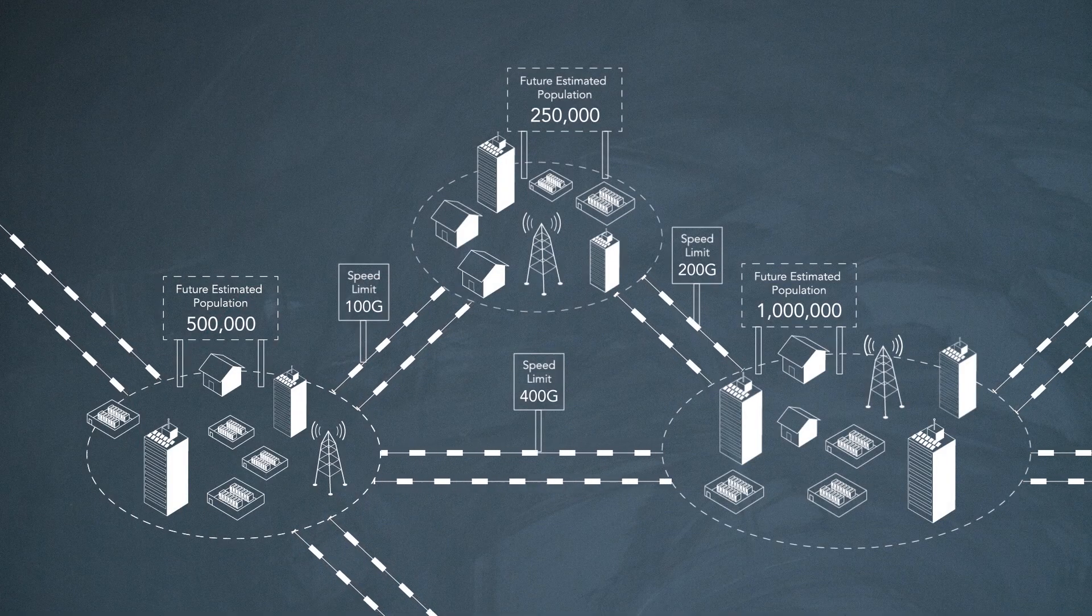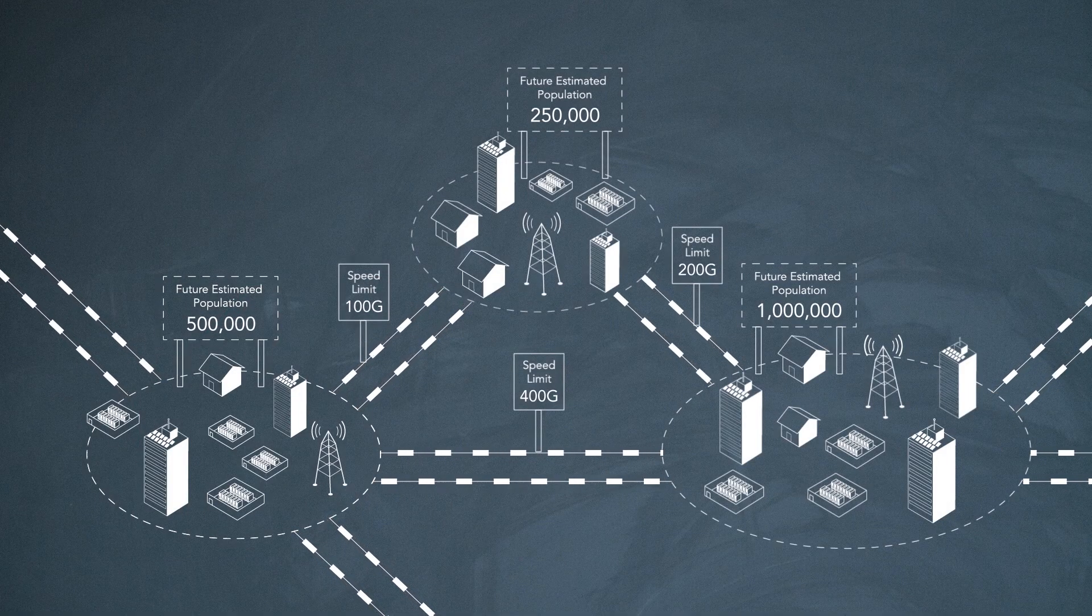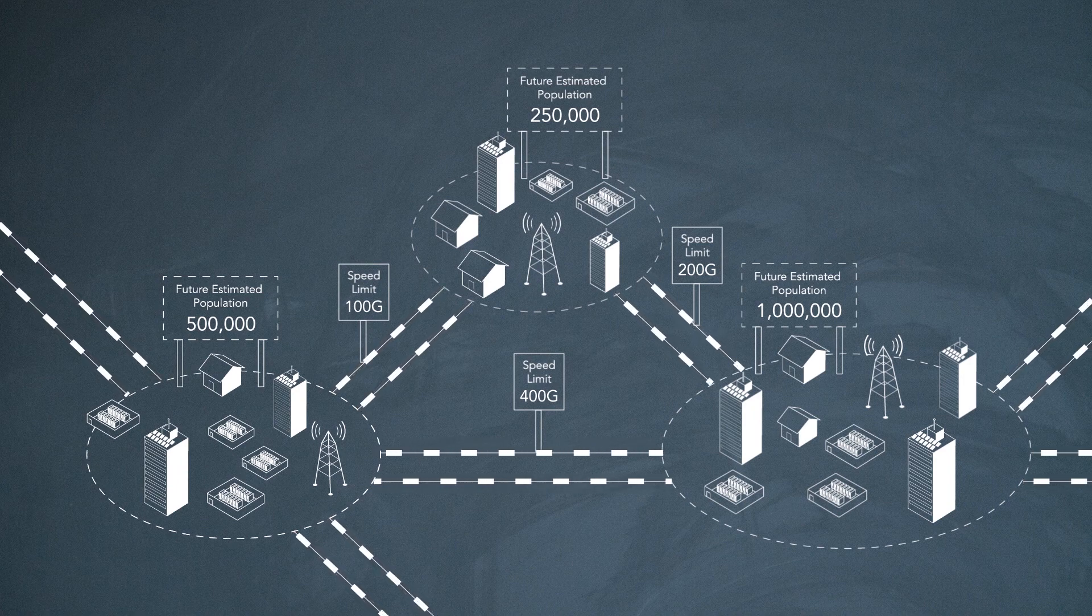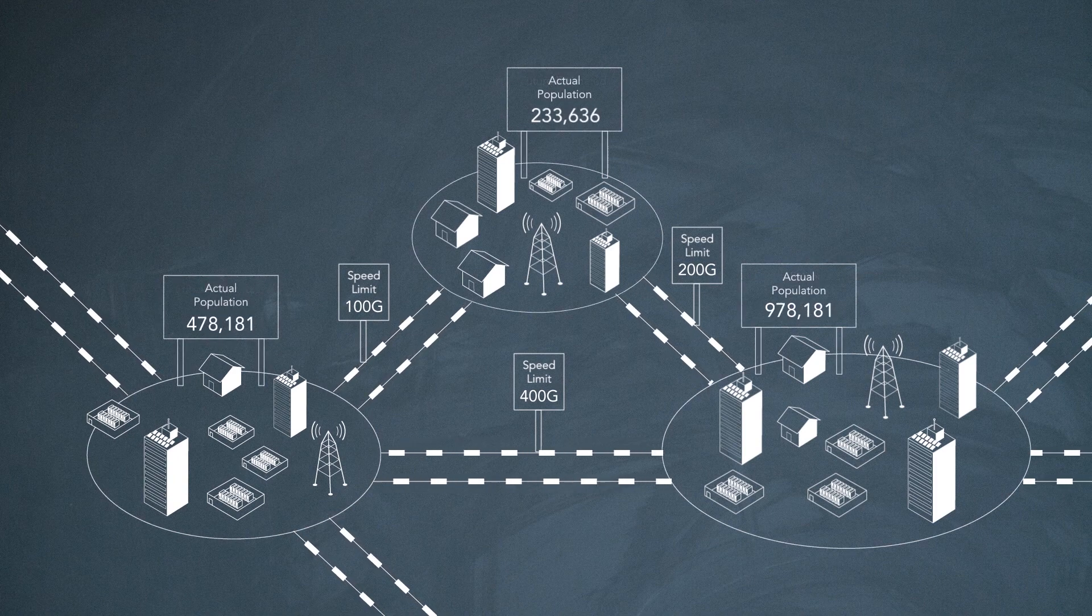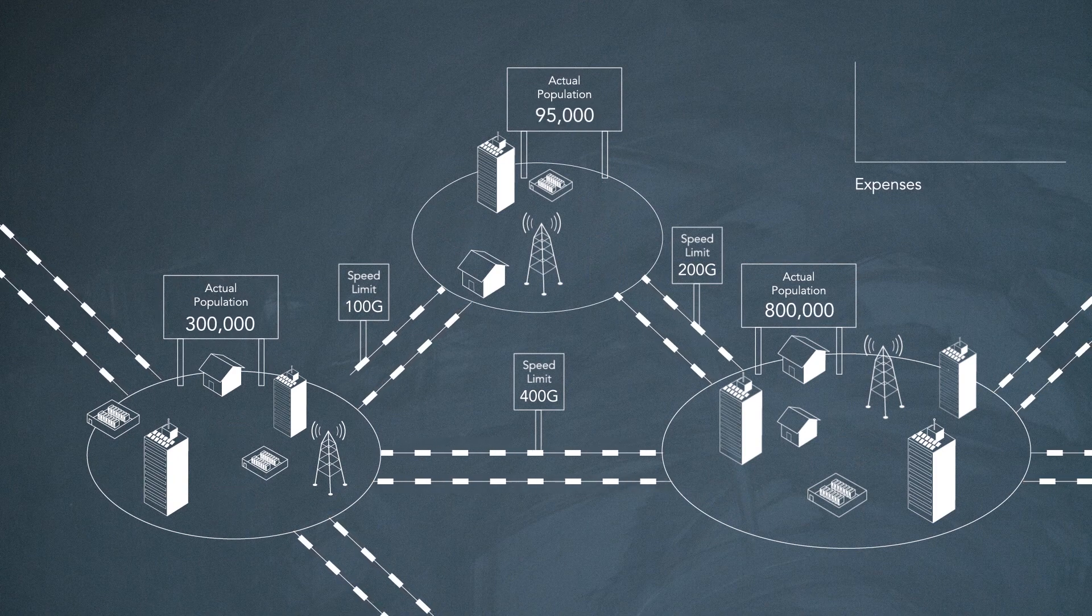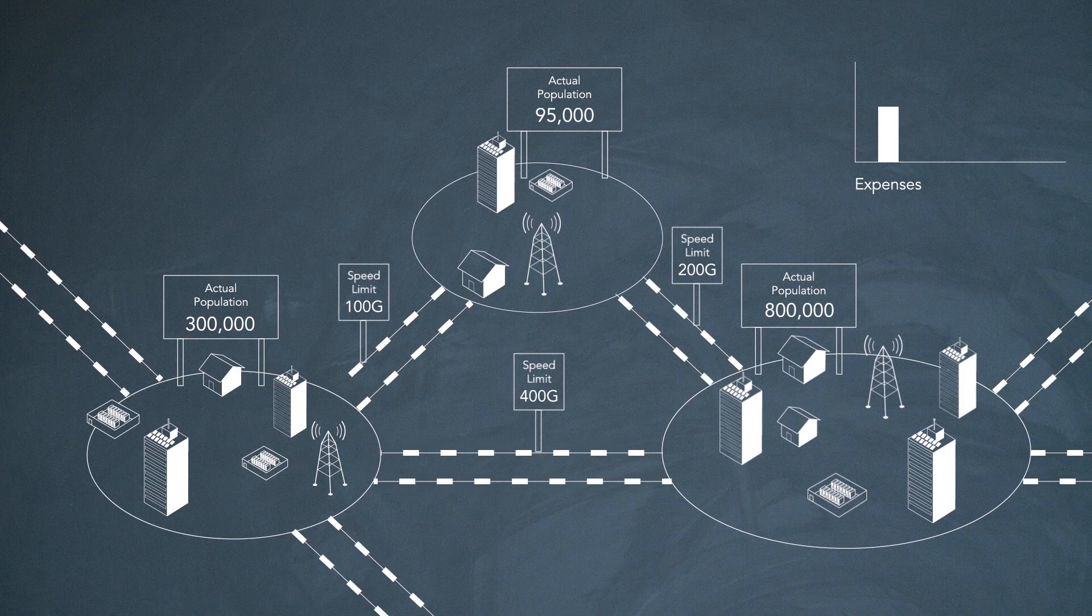Today, optical networks are predominantly static. They're designed to tolerate full-fill end-of-life conditions using best-guess predictions of worst-case capacity requirements. If you overestimated the capacity, you have to pay for more than you need and are left with an inefficient network.